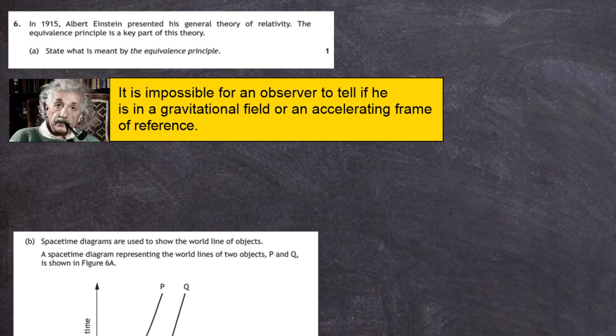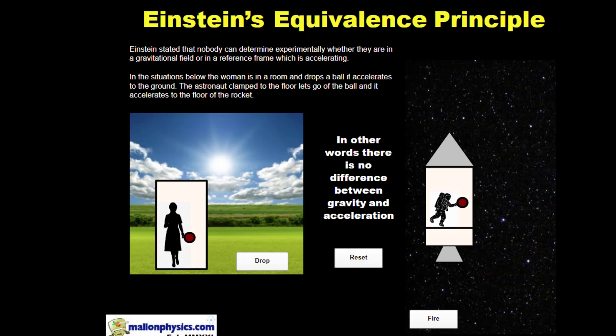We can go to our simulation to see this for real. The woman is on planet Earth in a gravitational field on the surface. She's in a room and doesn't know she's there, but when she drops the ball from her hand it accelerates downwards and hits the ground. She concludes there's a force of gravity pulling the ball towards the ground, accelerating it downwards.